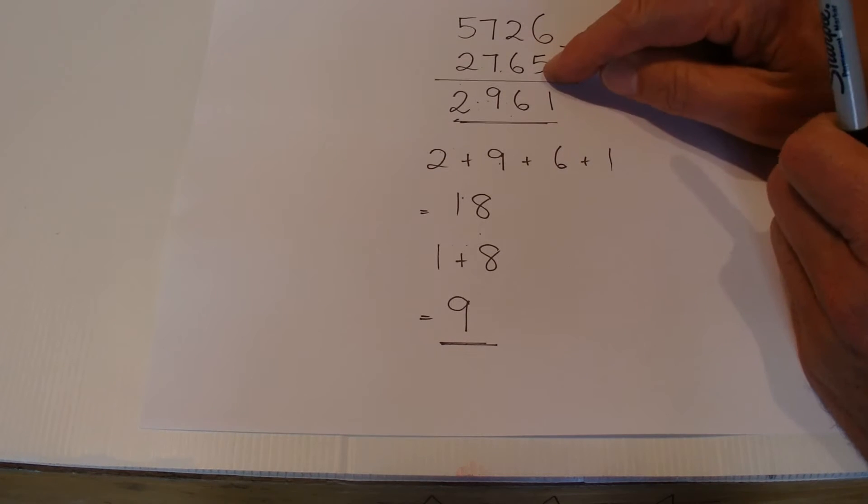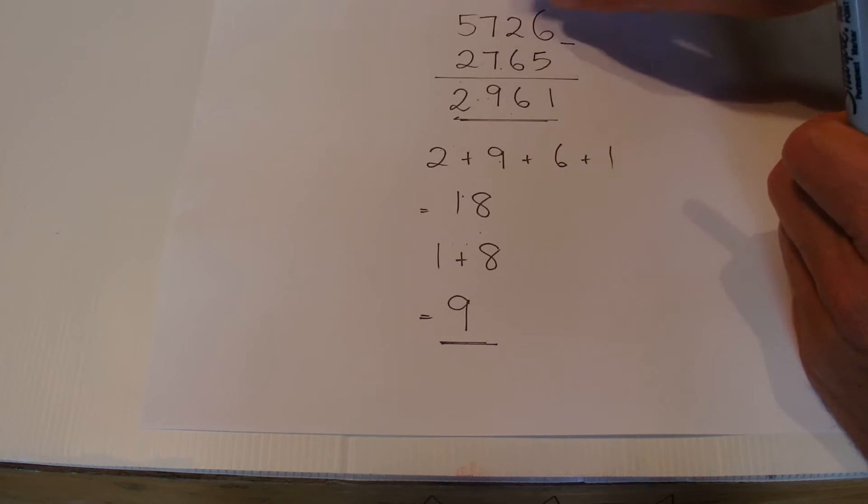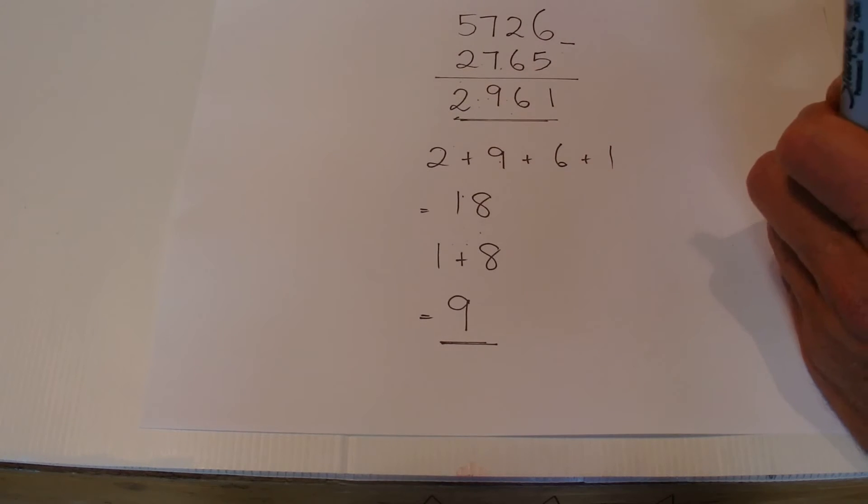Then what we're going to do is subtract the smallest one from the largest one to find the difference. In this case, 5,726 less 2,765 is 2,961.